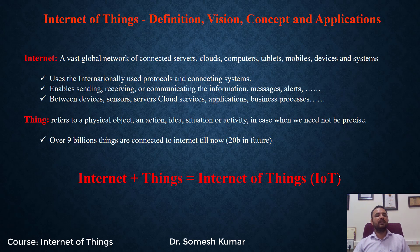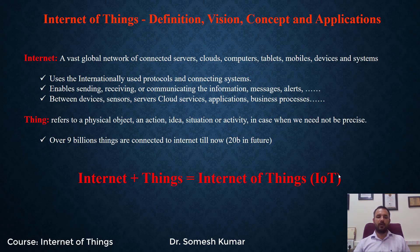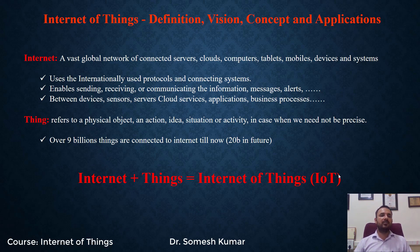Currently around 9 billion things are connected to the Internet. In future, probably more than 20 billion things will be connected with the help of the Internet. The things may be physical objects or virtual objects. Virtual objects are intangible — you cannot see those objects. For example, your e-books are one good example of virtual things, or e-paper. Everyone today is reading e-books — this is one example of how virtual things are connected with the Internet.